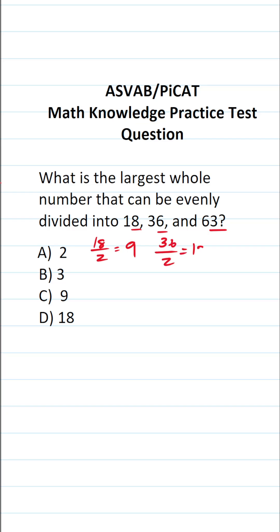36 divided by 2 is 18. Is 63 divisible by 2? Well, its last digit is 3, which is odd, so 63 is not divisible by 2. So A is not correct.